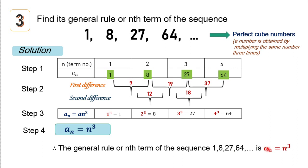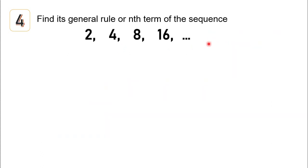Therefore, the general rule and nth term of the sequence 1, 8, 27, 64 is a-sub-n equals n cubed. In this type of problem, it is very important to examine the terms in the sequence, because there are some sequences that are special cases — like this one, where 1, 8, 27, and 64 are perfect cube numbers.